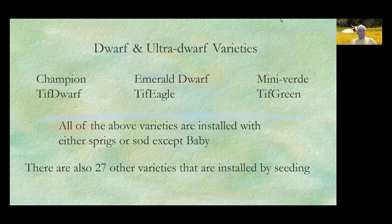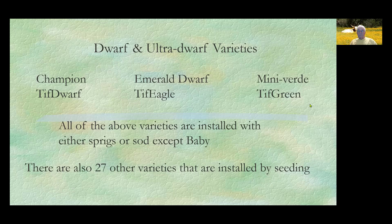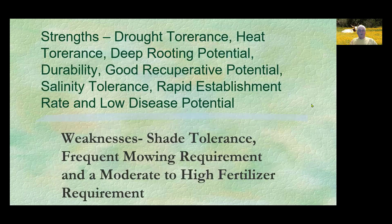There are also some dwarf and ultra-dwarf varieties: Champion, Tif Dwarf, Emeril, Tif Eagle, Mini Verde, and Tif Green. All of the above varieties are installed with either sprigs or sod. There are also 27 other varieties installed by seeding. Bermuda grass strengths include drought tolerance, heat tolerance, deep rooting potential, durability, good recuperative potential, salinity tolerance, rapid establishment rate, and low disease potential.